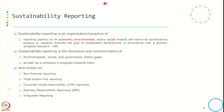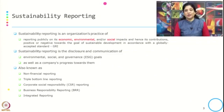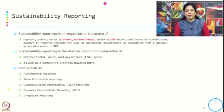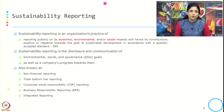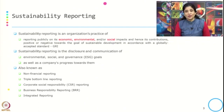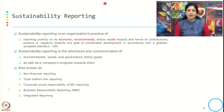Sustainability reporting is an organization's practice of reporting publicly on its economic, environmental and social impact, and hence its contributions — positive or negative — towards the goal of sustainable development in accordance with a globally accepted standard. The key highlights are: this is an organizational practice; it covers economic, environmental and social impact; it covers contribution positive or negative to sustainable development; and it follows a globally accepted standard.